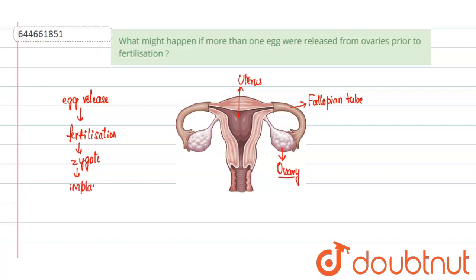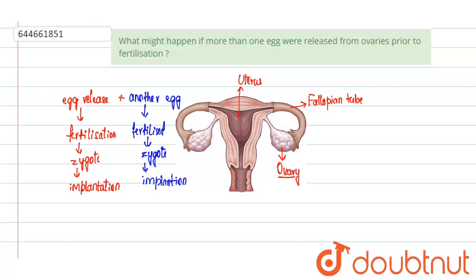Now, if there is one extra egg that is also released, there are chances that this egg will also get fertilized, also form a zygote, and also undergo implantation. So now there will be two embryos implanted onto the uterus, and this leads to the formation of what is known as fraternal twins. Fraternal twin formation can take place if more than one egg is released from the ovaries prior to fertilization.